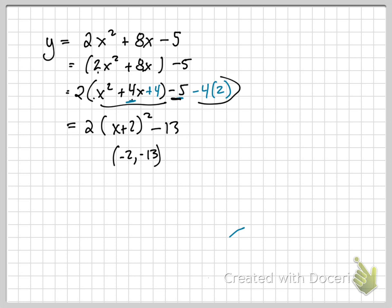So that gives me 2 times. This becomes x plus 2 squared. And then I have this minus 5 minus 8 is a minus 13. So my vertex would be a negative 2, negative 13. So I'm going to leave that up there and I'm going to give you another problem.